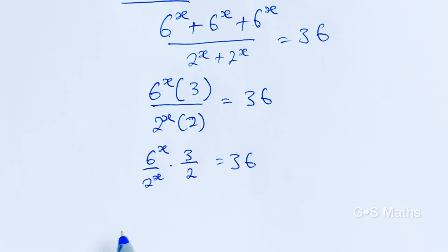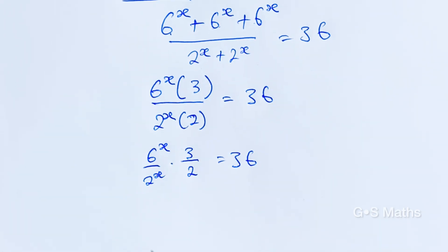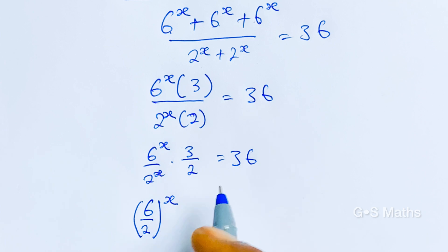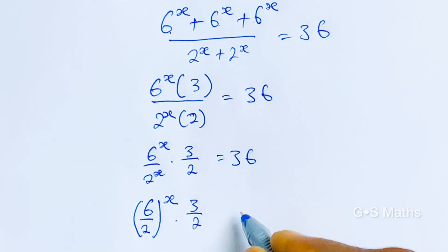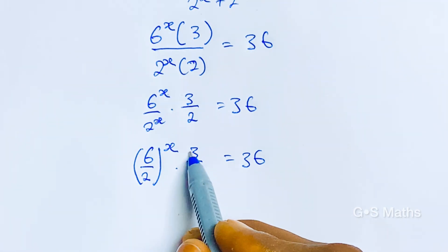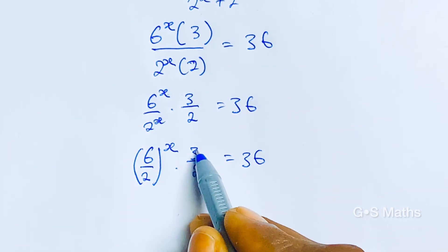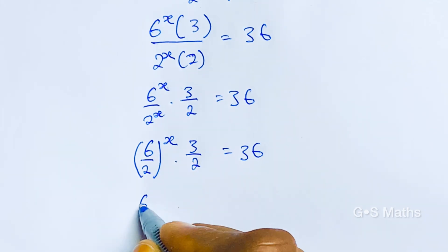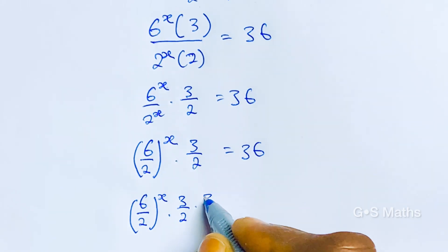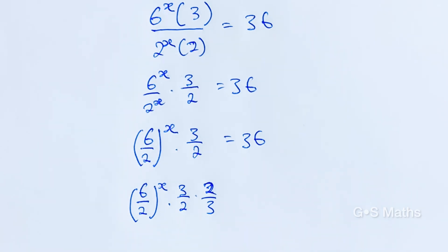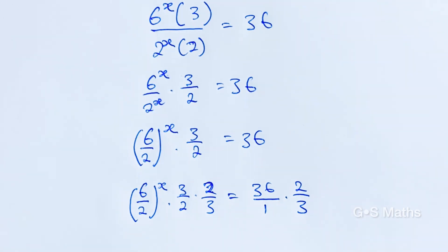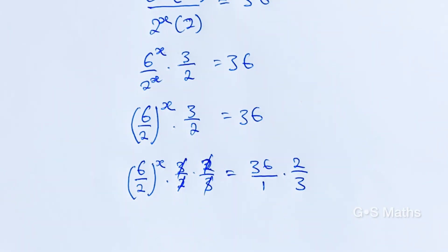So having this now, we can write this out as: 6 to the power of x divided by 2 to the power of x, multiplied by 3 over 2, is equal to 36. Looking at this, we can write this part as 6 divided by 2, to the bracket of x — because this is x, this is x, so putting the bracket still makes it the same thing — multiplied by 3 over 2 is equal to 36. We want to multiply both sides by the inverse of 3 over 2 to remove it, so we multiply both sides by 2 over 3.